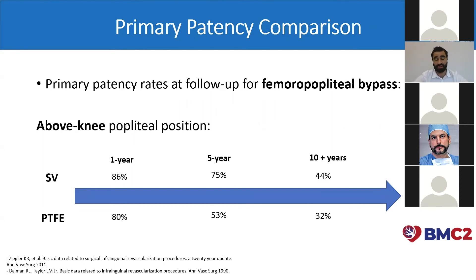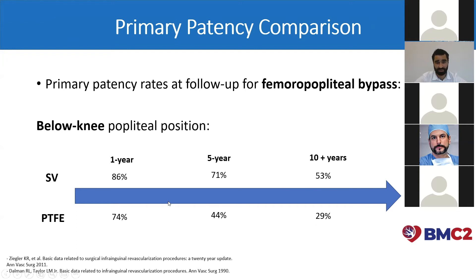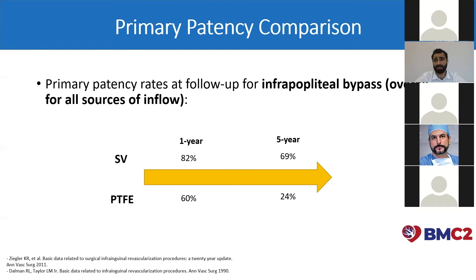Comparing the primary patency for the great saphenous vein versus the PTFE prosthetic graft, starting with femoral-popliteal bypass for the above-the-knee position: the one-year patency is 86% for saphenous vein versus 80% for PTFE. At five years it's 75% versus 53%, and at 10-plus years it's 44% versus 32%. When going below the knee, the difference becomes more pronounced. The saphenous vein at one year has a primary patency of 86% versus 74% for PTFE; at five years it's 71% versus 44%, and at 10-plus years it's 53% versus only 29%. For overall infrapopliteal bypass, the PTFE prosthetic graft performs poorly, with 60% primary patency at one year versus 82% for the great saphenous vein, and at five years only 24% versus around 70% for the great saphenous vein, which explains why prosthetic graft is preferably used for the above-the-knee position.